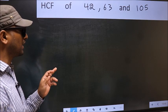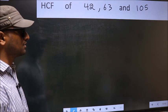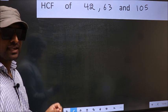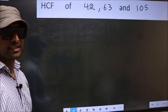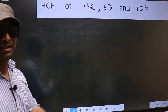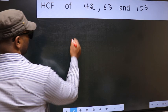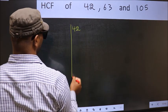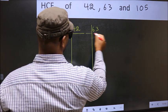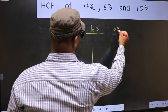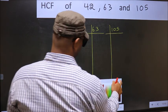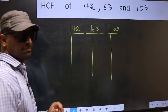HCF of 42, 63 and 105. To find the HCF, we should do the prime factorization of each number separately. What I mean is 42, 63, 105. This is your step 1.